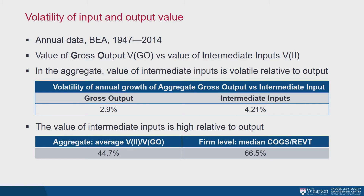Starting with motivating observations: looking at aggregate data from the BEA on time series properties of gross output and intermediate inputs, the first observation is that intermediate inputs' value — adjusted for inflation — is more volatile than that of gross output. Second, as a fraction of gross output, intermediate inputs are pretty non-trivial. In the aggregate data, the time series average of this ratio is about 45 percent. Looking across firms in Compustat data, the median in the cross-section is even higher, about 67 percent.